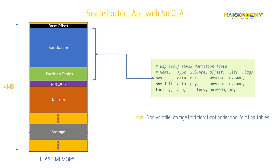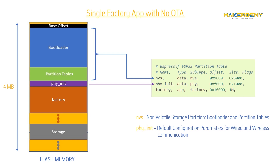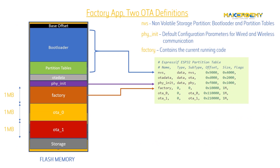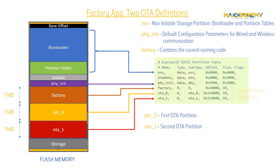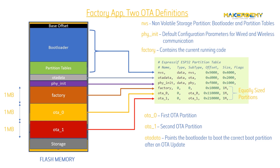The NVS partition is a non-volatile storage partition which consists of the bootloader and partition table. The phy_init partition consists of default configuration parameters for all wired and wireless communication in the ESP32. Finally, the factory partition consists of the current code which is flashed. When the factory app to OTA definitions mode is enabled in the ESP32, the factory partition is split into three partitions of equal size, namely factory, OTA_0, and OTA_1. In the partition table, you can also see an OTA data partition. This partition points the bootloader to select the correct OTA partition to boot the code from using a boot flag. If this partition is empty, the code inside the factory partition is executed by default.